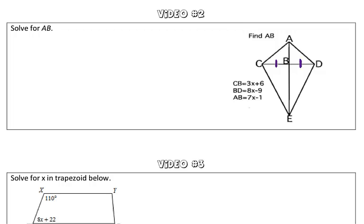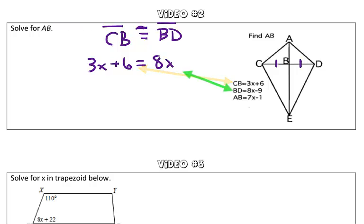We are told that CB is equal to 3x plus 6, and BD is equal to 8x minus 9. Since segment CB is congruent to segment BD, we can set up an equation to solve for x: 3x plus 6 equals 8x minus 9.